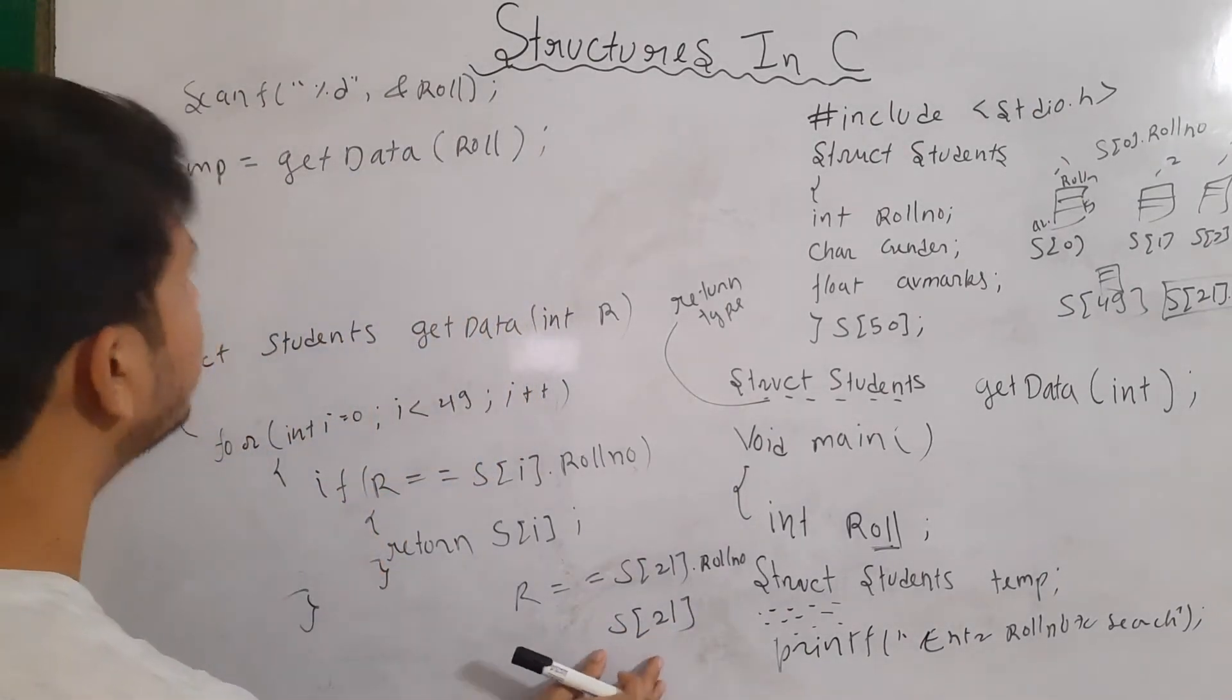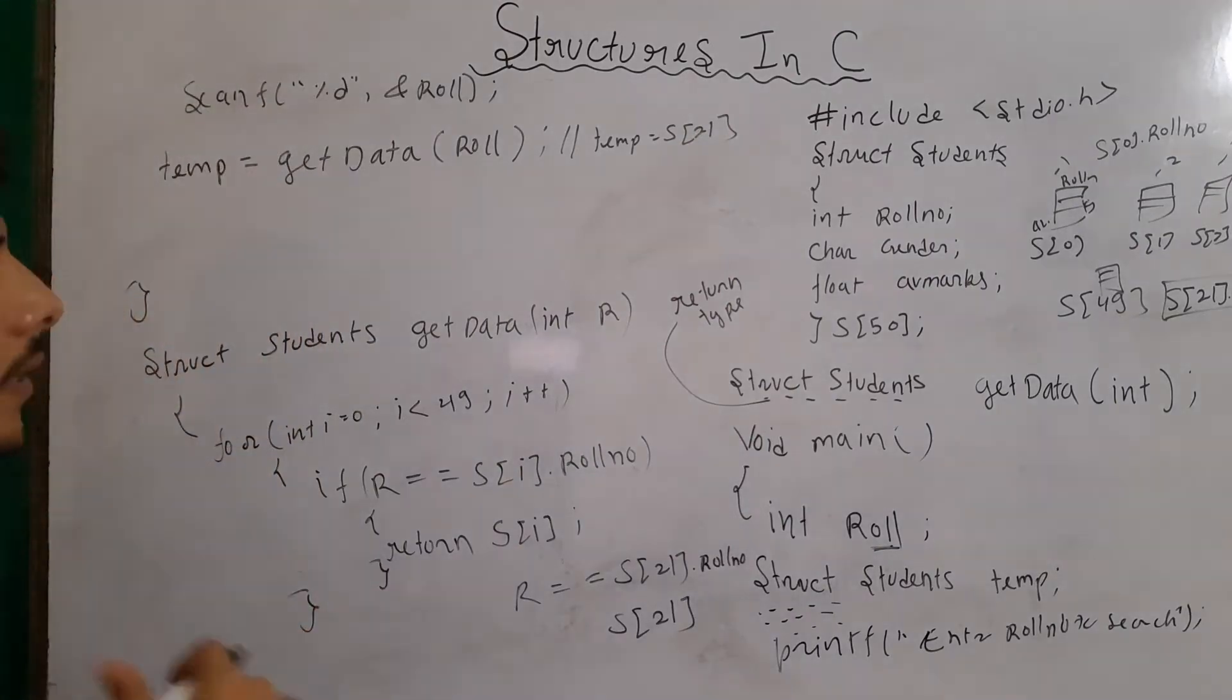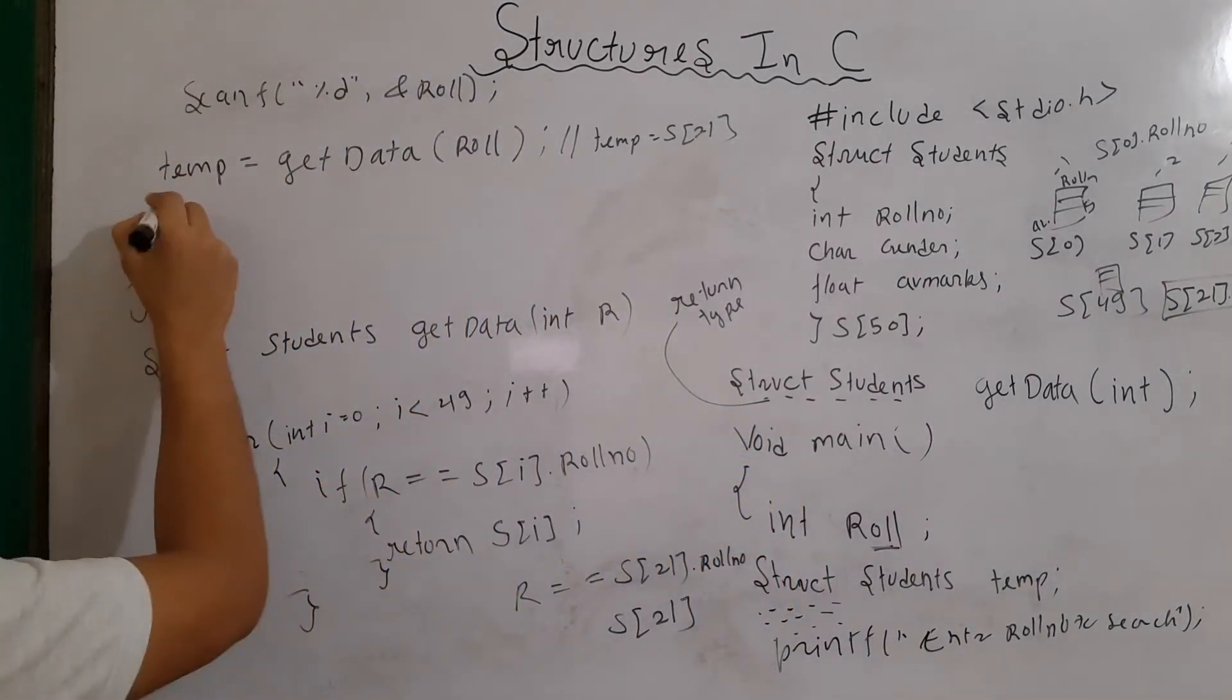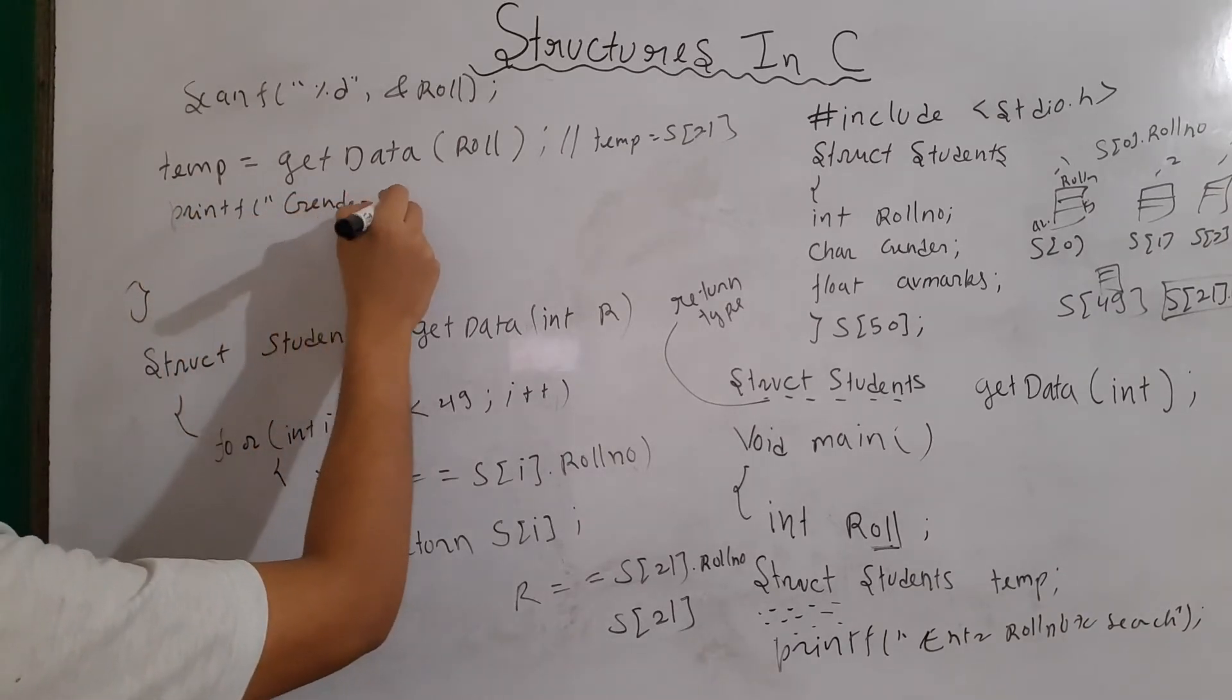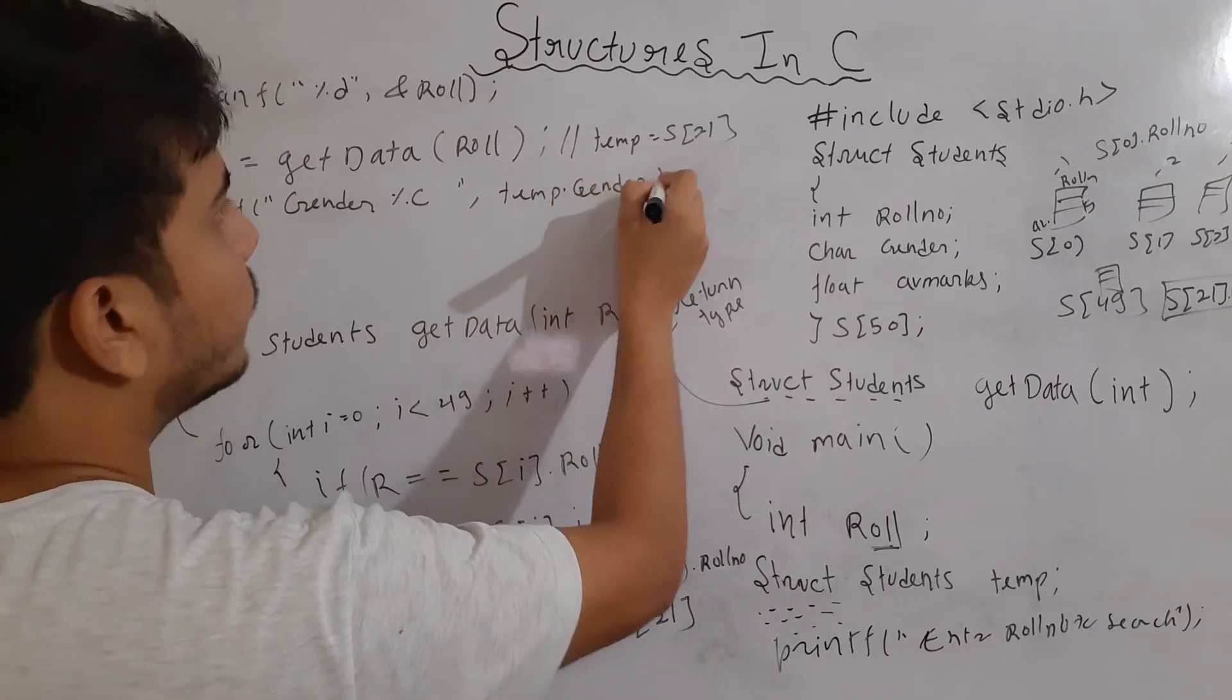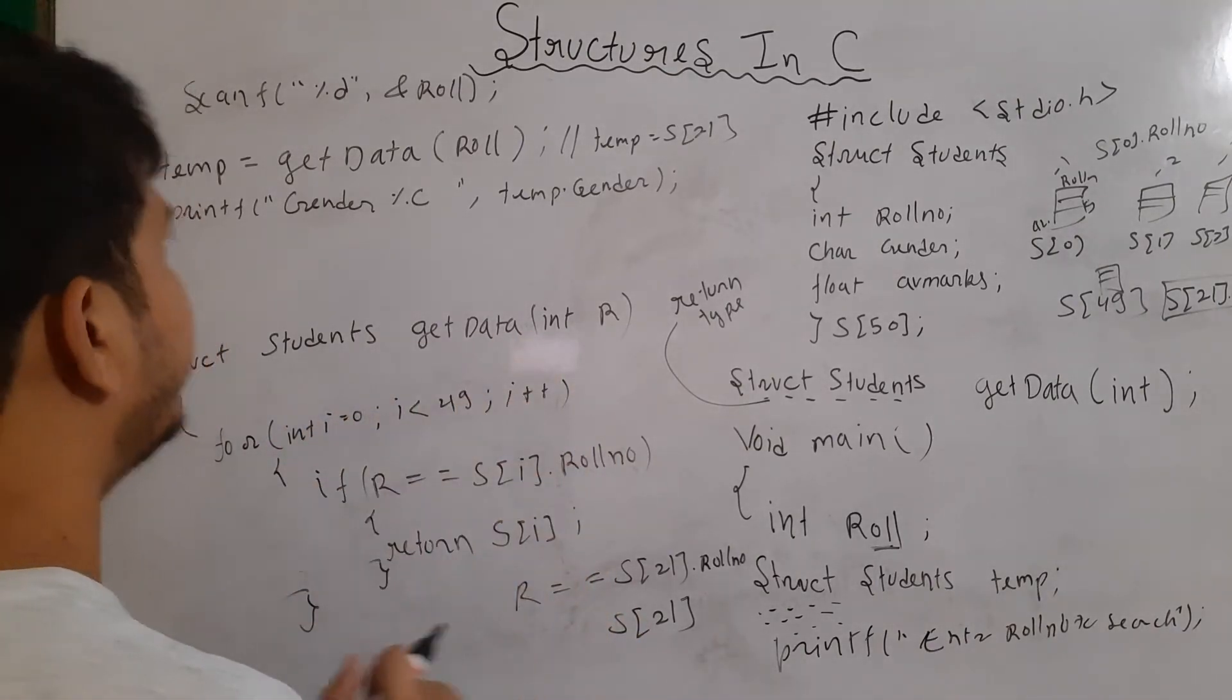Now, as soon as it will be written, this could become something like temp equals to s of 21. Now, all the data held by s21 will be assigned to the temp variable. So, both will be now having the same data. So, I will write here printf gender %c and I will write here temp dot gender. Because both are having the same data now. s21 and temp are holding the same kind of data. Same value of data or information.